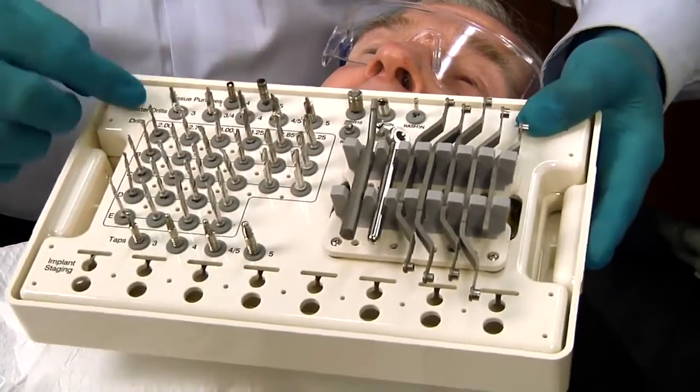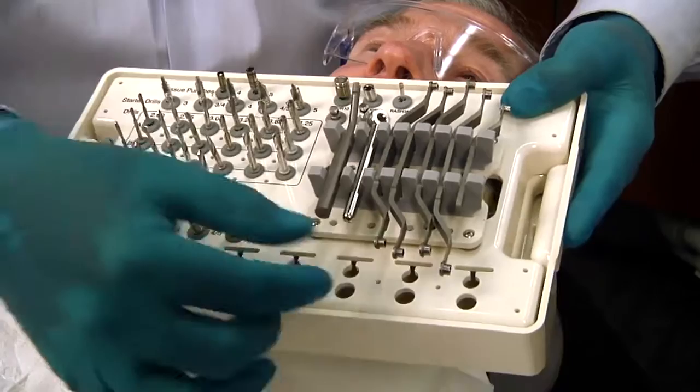They have the taps, the tissue punch, the starter drills, and then the sleeves.